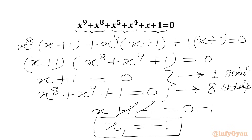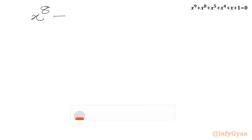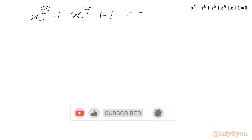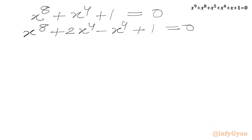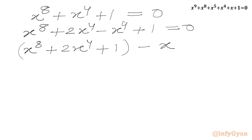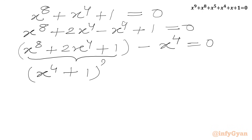Now we have to solve the degree 8 equation: x power 8 plus x power 4 plus 1 equal to 0. I will use the method of factorization. I can split the middle term as 2x power 4 minus x power 4 plus 1 equal to 0. Picking x power 8, 2x power 4, and 1 together gives a perfect square of x power 4 plus 1, and then we have minus x power 4, which we write as minus (x squared) whole square, equal to 0.